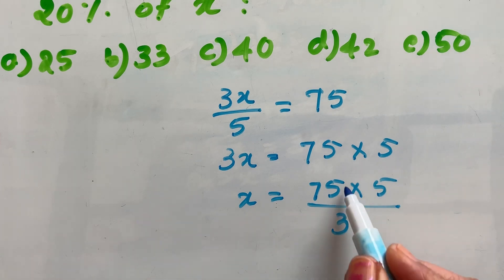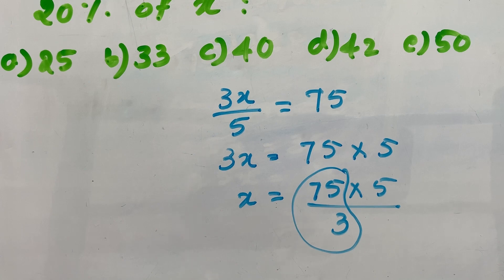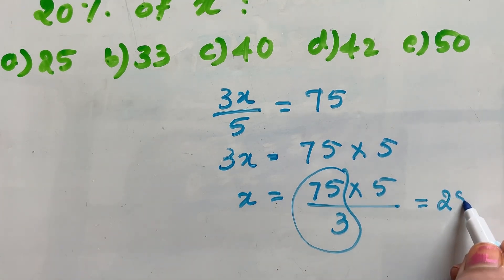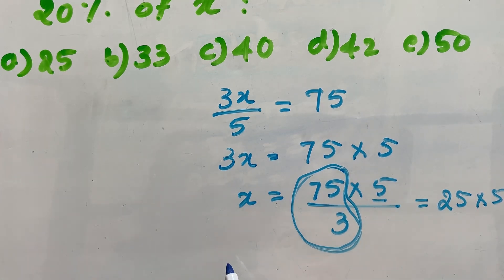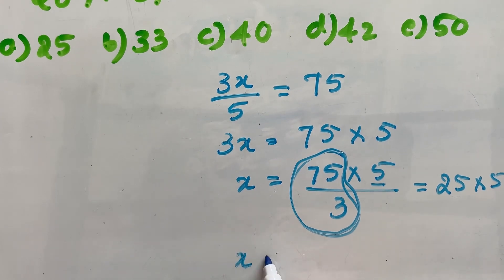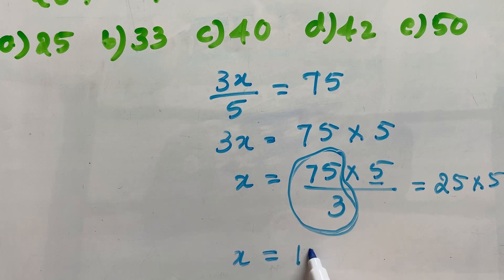Now, 75 divided by 3 or 75 over 3 is equal to 25. So this part is 25 multiplied by 5. We have 5 here multiplied by 5. That means x is equal to 25 times 5, which is 125.